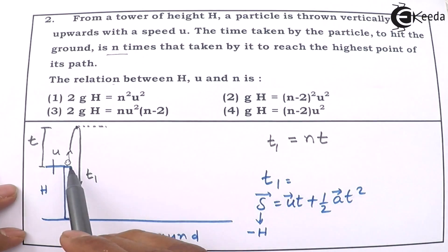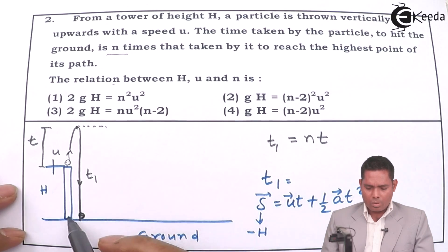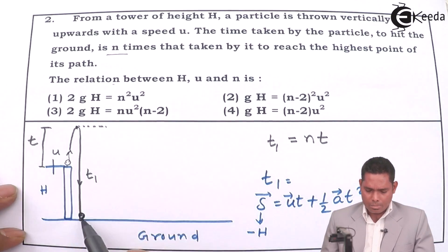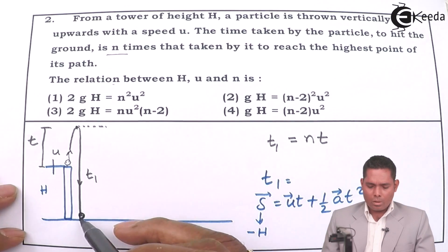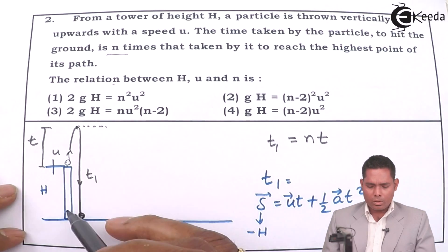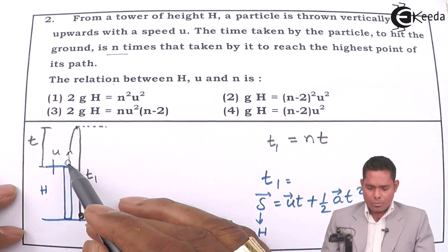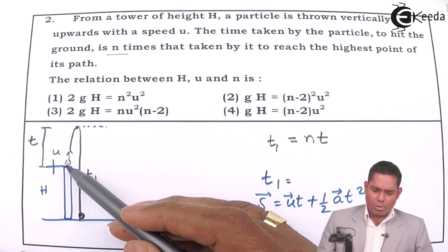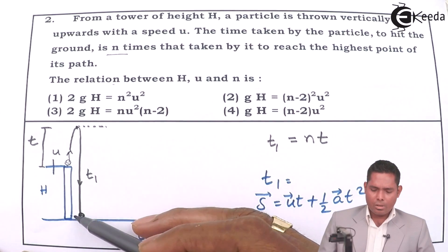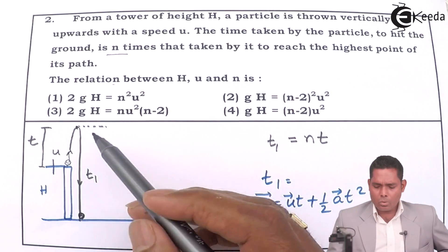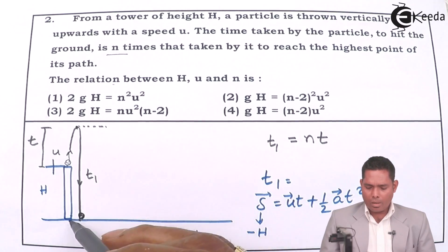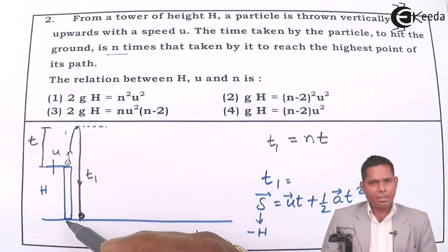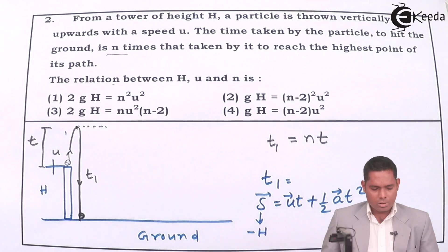In this equation, s will become minus h — because the initial point is at the origin (top of tower) and the final point is on the ground below. The object goes up and follows a path falling down, landing close to the base of the tower. Since this side is positive and downward is negative, the displacement is minus h.